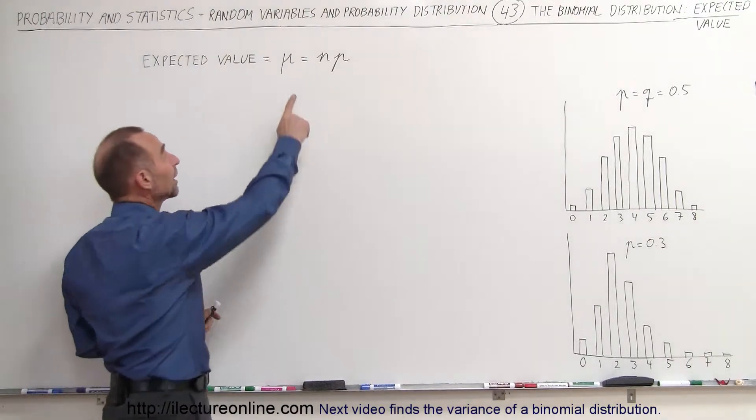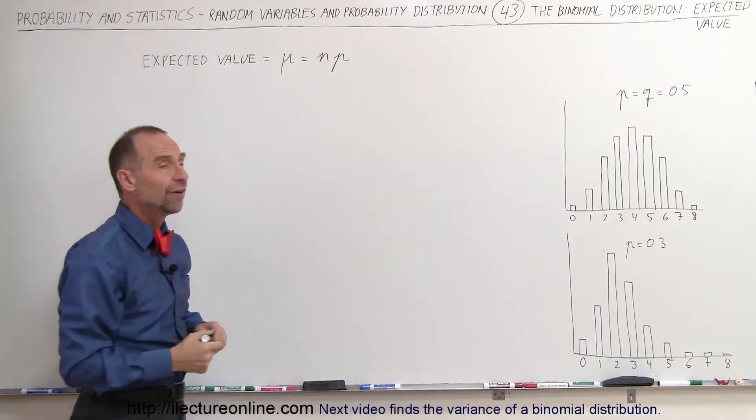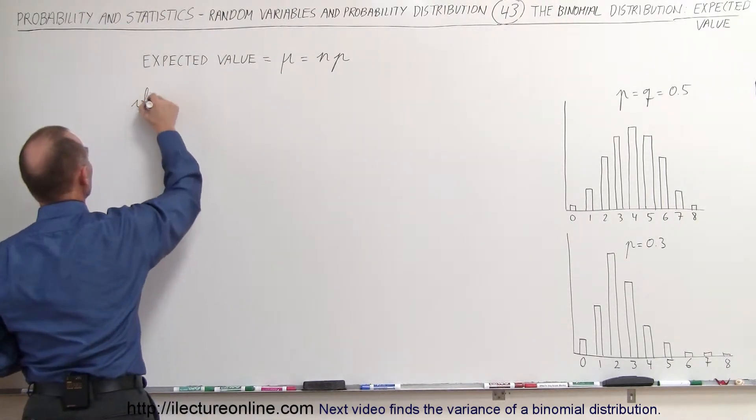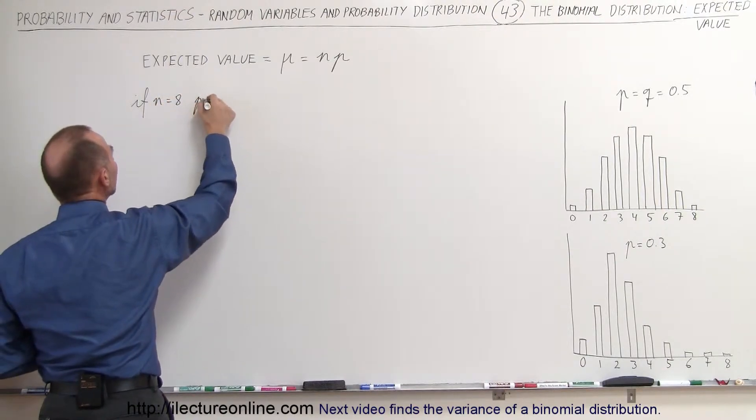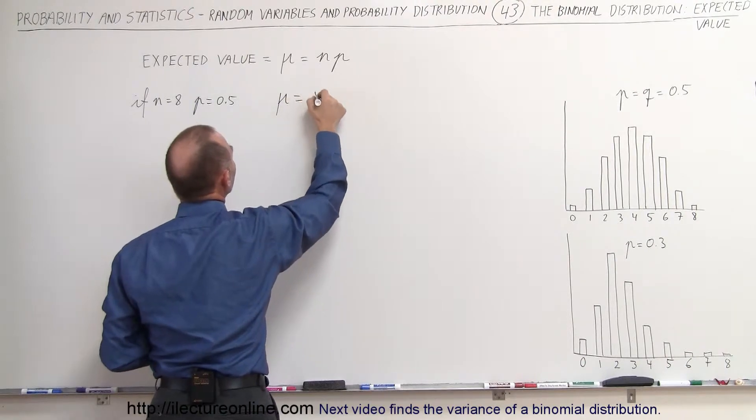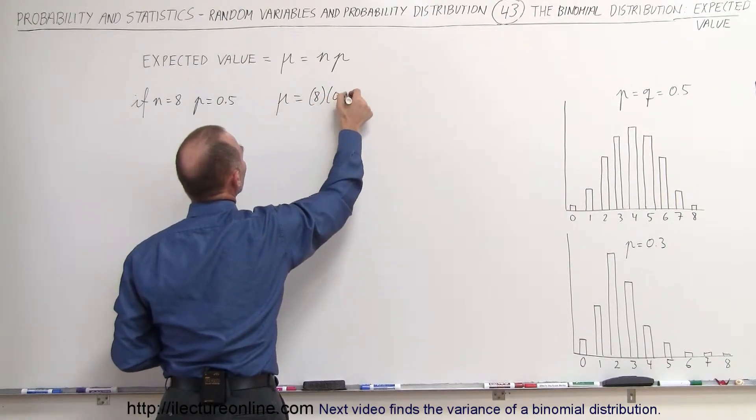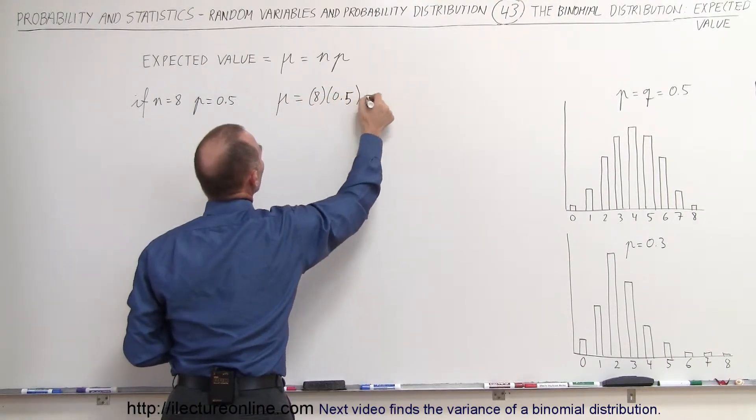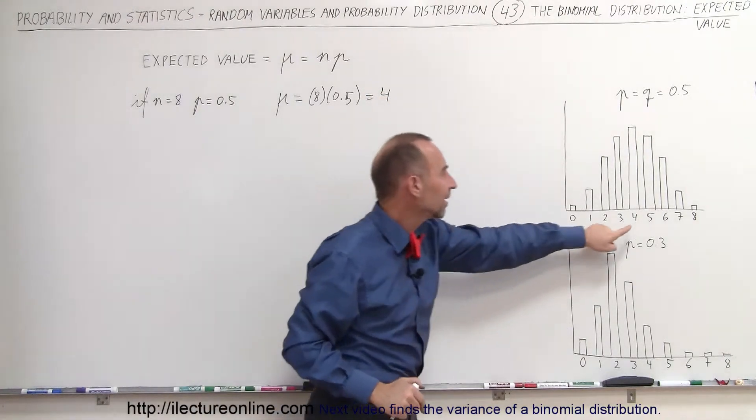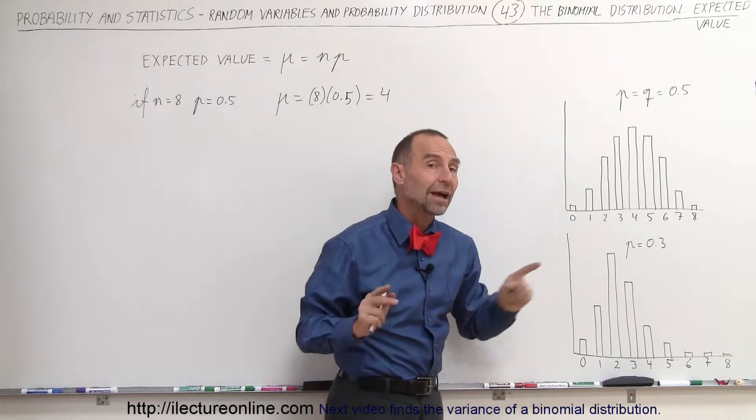Notice that we use the Greek letter mu to indicate expected value. So in the case where if N is equal to eight and P is equal to 0.5, we then have mu is equal to eight times 0.5, which is equal to four or 4.0. And so you can see that that's indeed matching up with our graph that we have on this side.